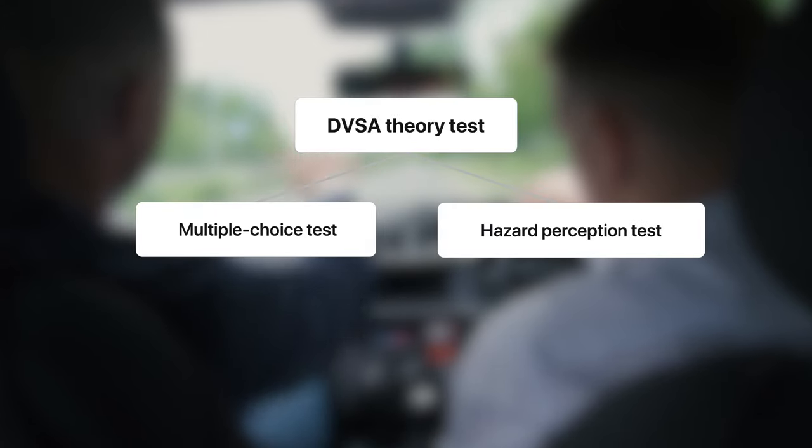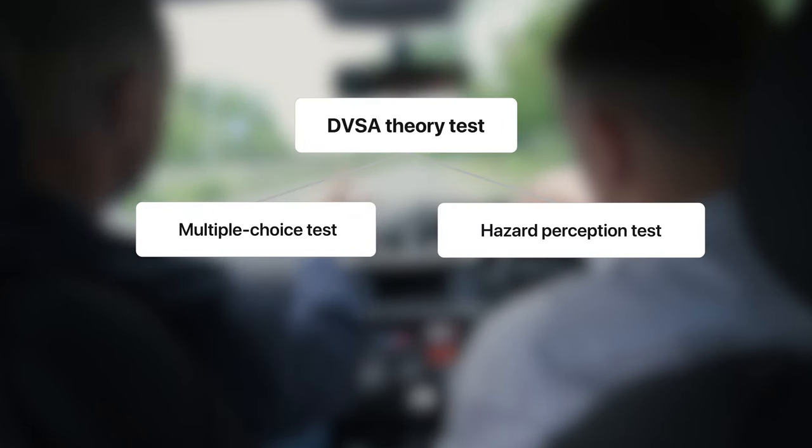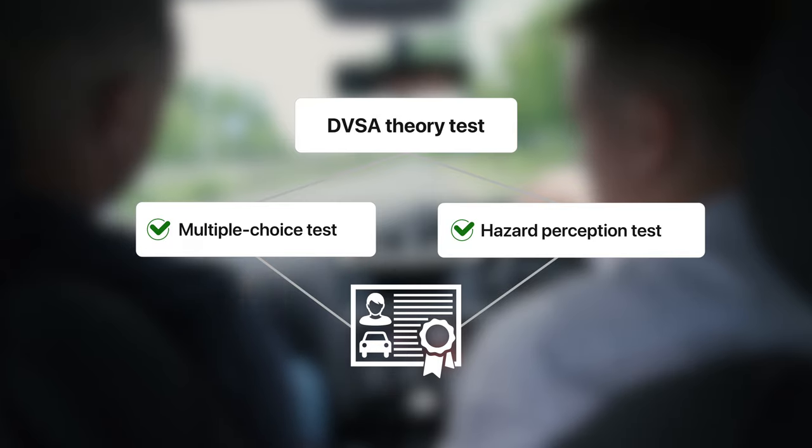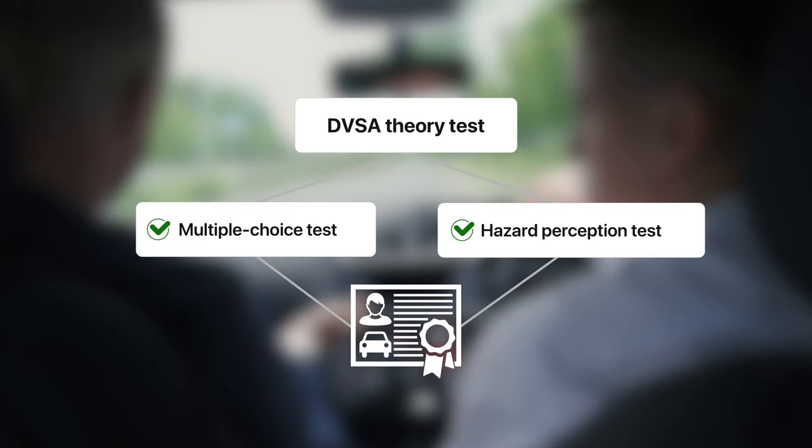The DVSA theory test is divided into two parts: a multiple-choice questions test and a hazard perception test. You must pass both sections to pass the test.